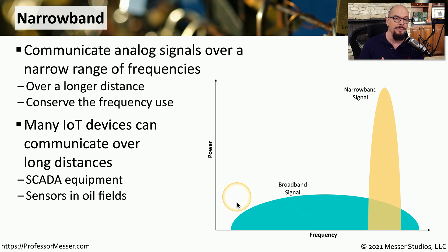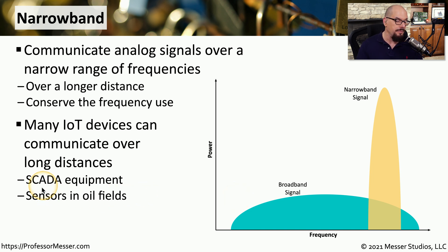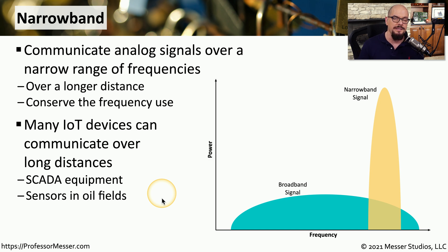Narrowband can often communicate over much longer distances. You might find this narrowband communication where there is SCADA equipment or sensors in oil fields, where those sensors may be distributed across a very large geographical distance.